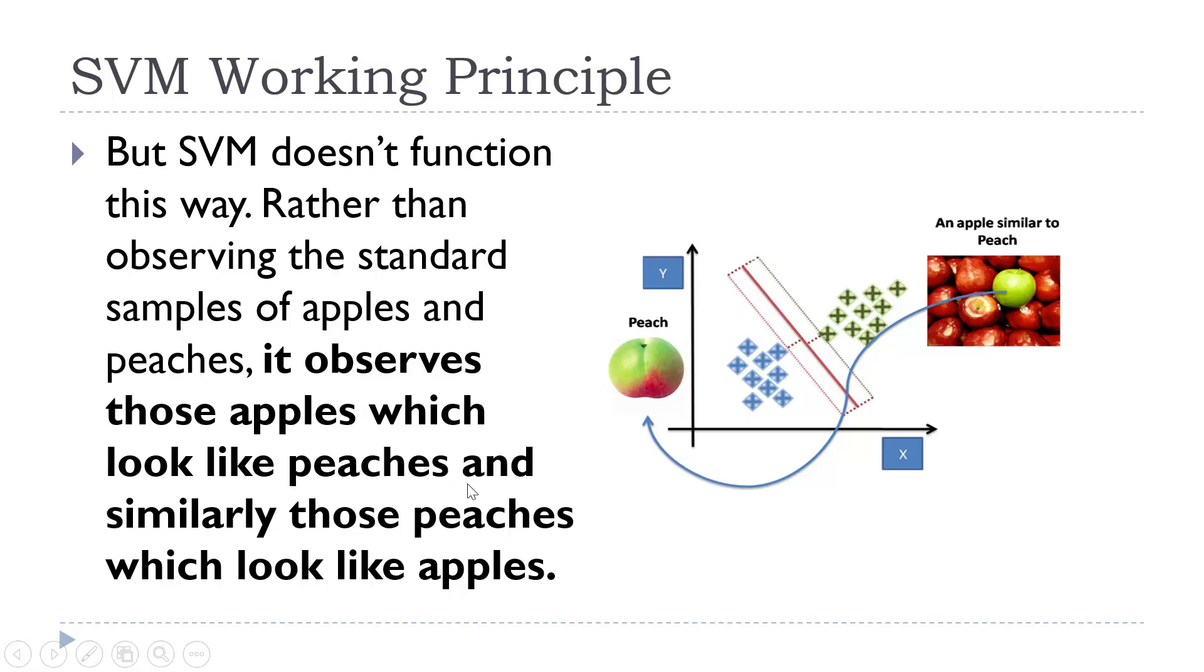And the system tries to classify these kinds of apples which appear like peaches or peaches which appear like apples into two different classes. The idea is that if the classifier is able to identify or separate these types of fruits accurately, then automatically it will classify standard apples and standard peaches.